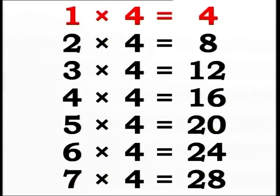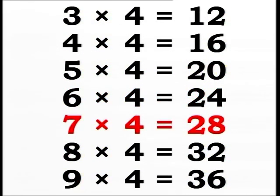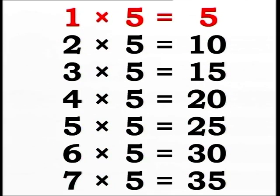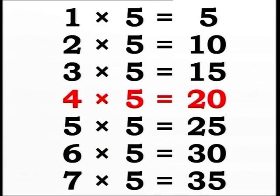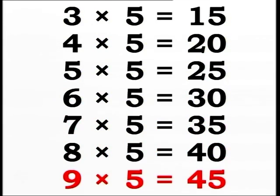1×4 equals 4. 2×4 equals 8. 3×4 equals 12. 4×4 equals 16. 5×4 equals 20. 6×4 equals 24. 7×4 equals 28. 8×4 equals 32. 9×4 equals 36. 1×5 equals 5. 2×5 equals 10. 3×5 equals 15. 4×5 equals 20. 5×5 equals 25. 6×5 equals 30. 7×5 equals 35. 8×5 equals 40. 9×5 equals 45.